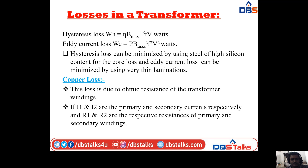The hysteresis loss Wh = η·Bmax^1.6·f·volume. The hysteresis loss can be minimized by using steel of high silicon content for the core. The eddy current loss can be minimized by using very thin laminations.